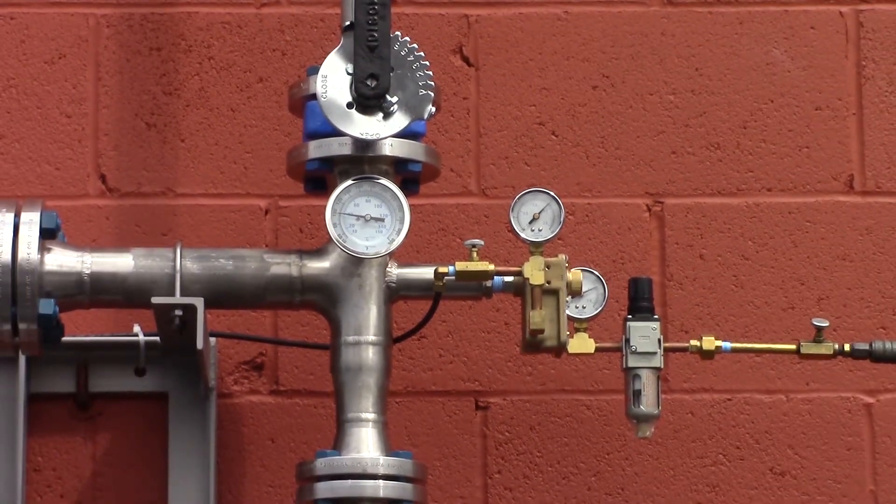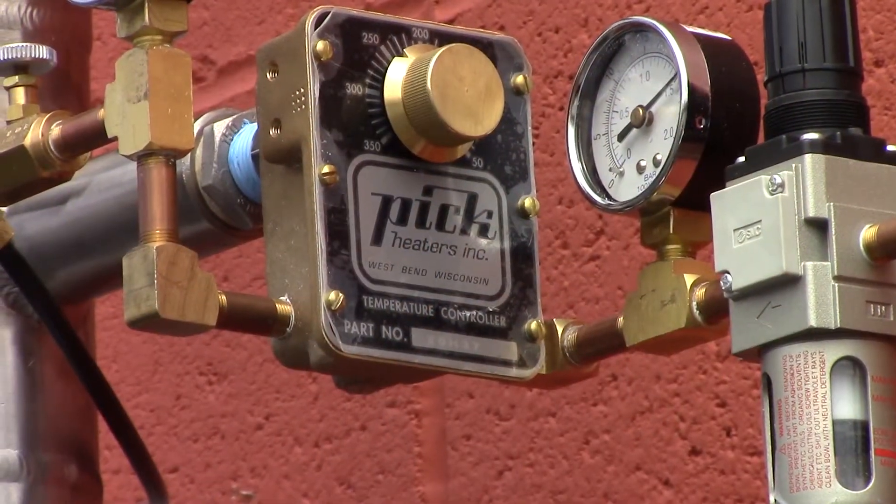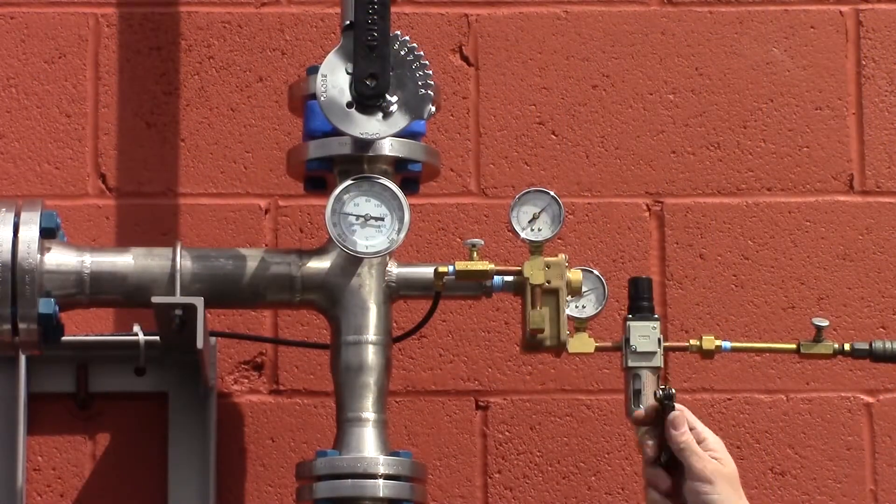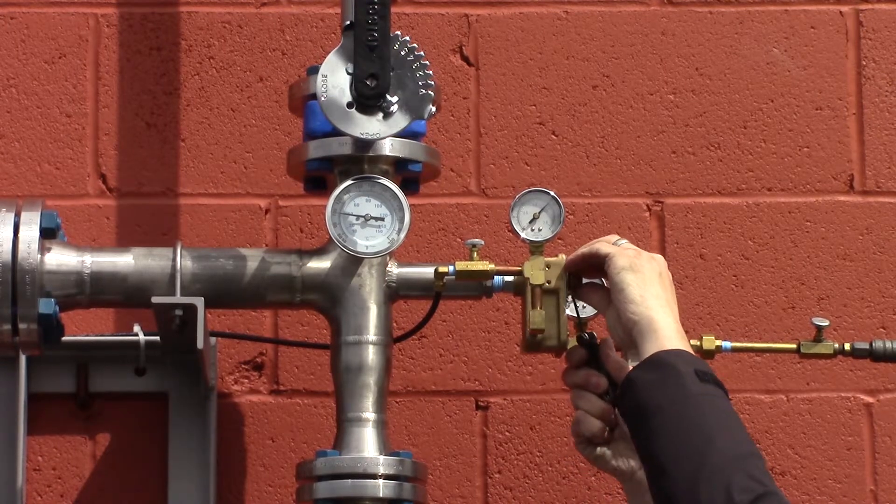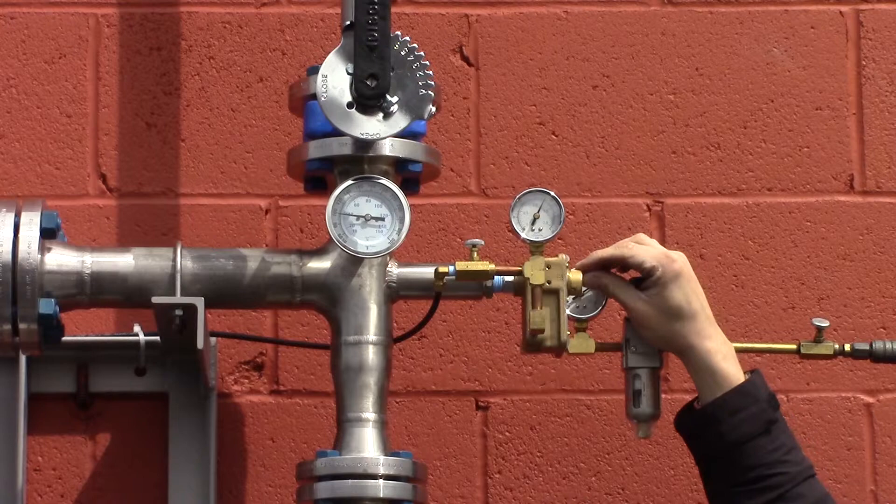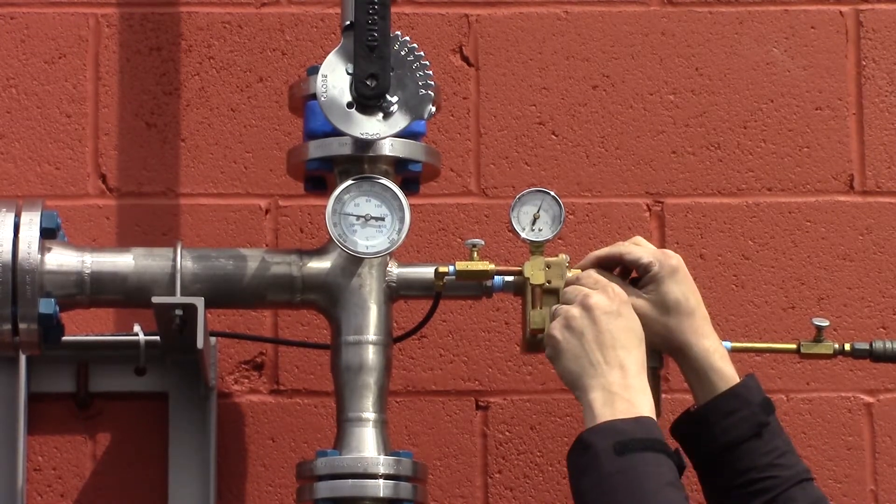The notch in the knob may not necessarily be aligned with the dial thermometer at this point. Next, use a 3/32 inch hex key wrench to loosen the set screw on the knob. Now reposition the knob so the notch aligns with the same temperature on the dial thermometer.